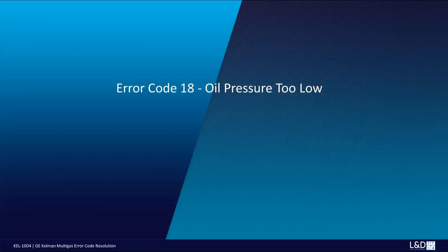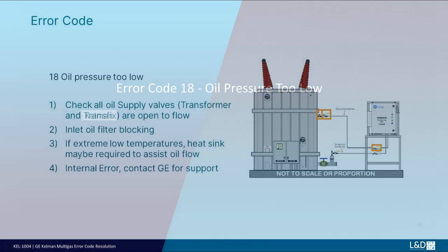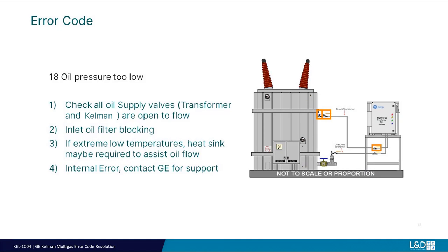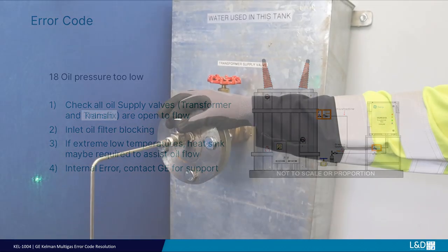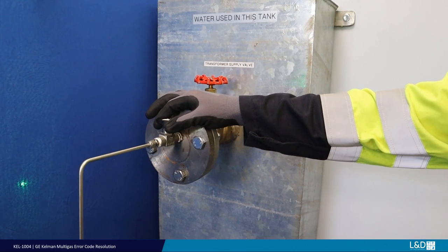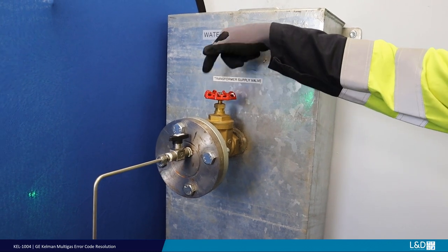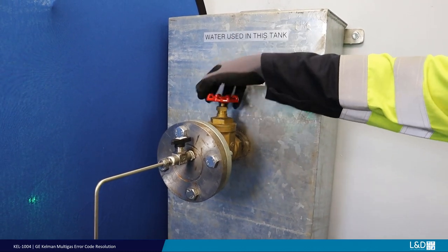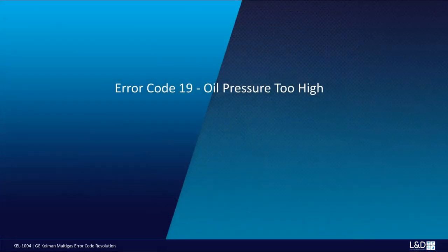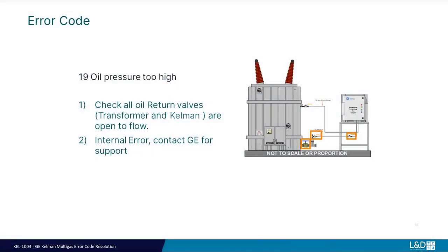Error code 18: Oil pressure too low. Check all transformer and Kelman fitted oil supply valves are fully open to flow. Check the inlet oil supply filter condition. Check for any excessive oil leaks. If fitted, any inline oil return filters are clean.